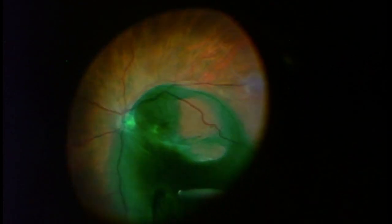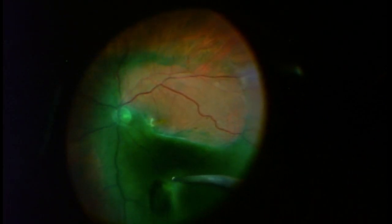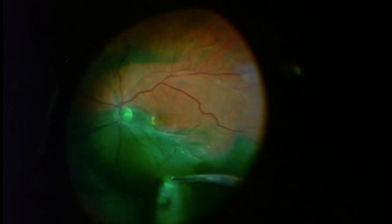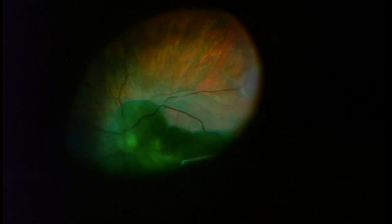The ICG dye is mixed with some dextrose, which is a sugar solution heavier than water. In this way, I can more specifically stain just the retina without the dye mixing all throughout the vitreous cavity.